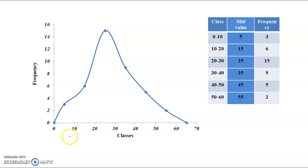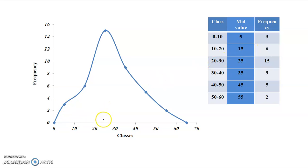The mid-values are marked on the x-axis. The mid-value for the first class is 5, the next is 15, then 25, 35, and so on. We use these mid-values to plot the frequency curve.